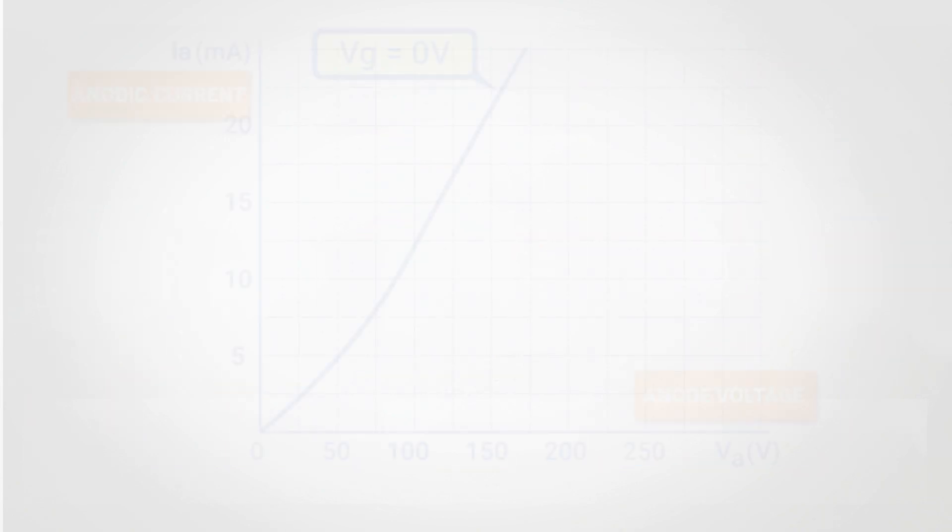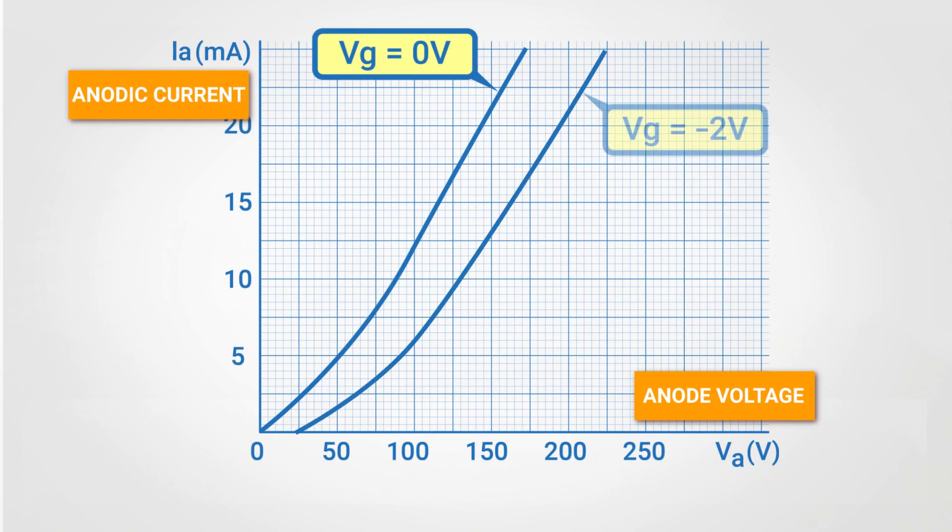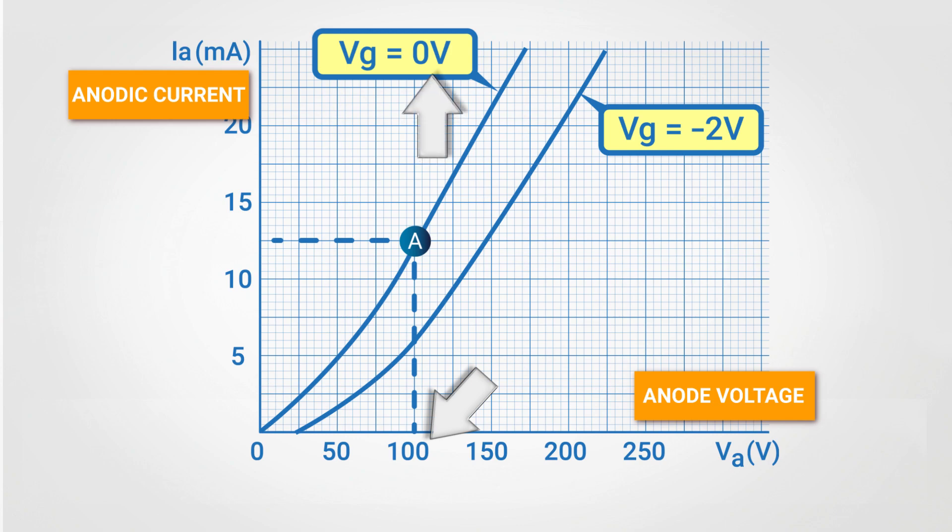In this scheme, we can notice that the curve obtained with a negative grid voltage lies on the right of the curve obtained with a grid voltage equal to zero. We can now assume that when we apply a certain anode voltage to the triode, the resulting anode current is as small as the grid voltage is more negative. In this scheme, we can see that when the triode operates under point A conditions, in which the anode voltage is 100V and the grid voltage is 0V, the resulting anode current will be 12mA.